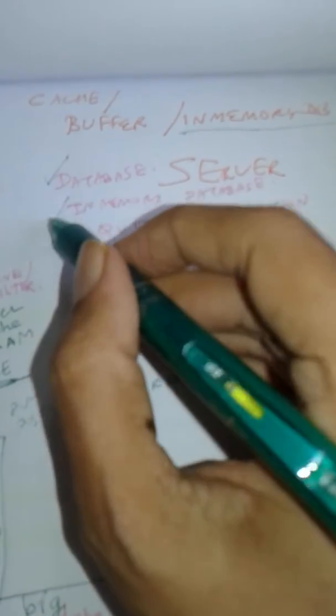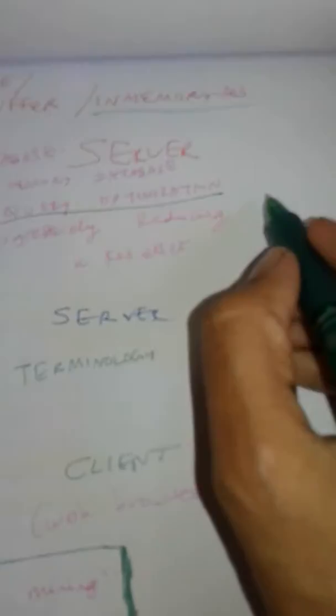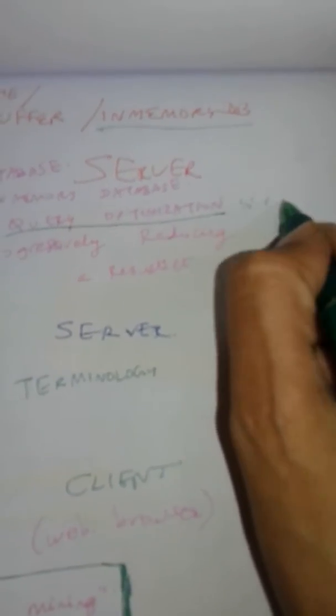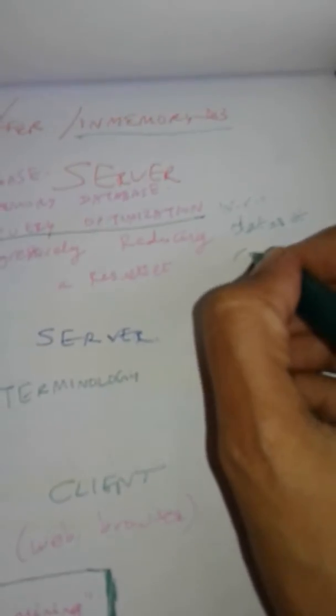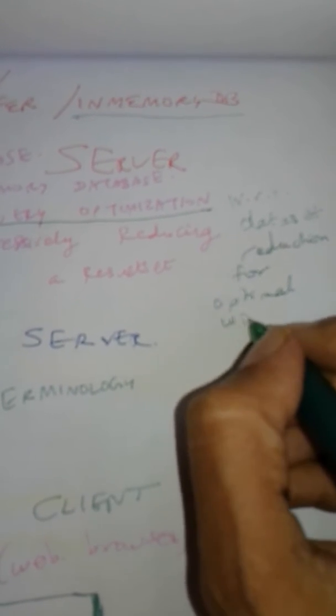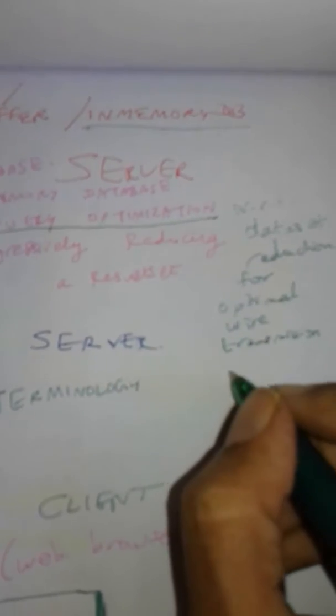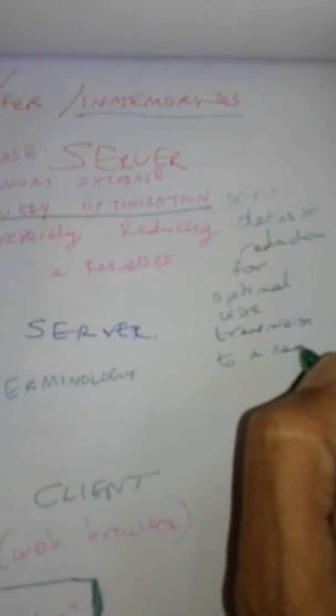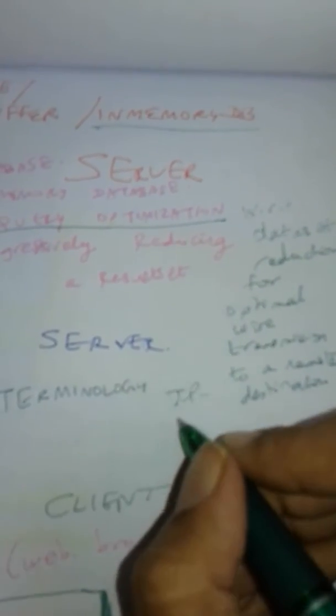We saw what is a database, what is an in-memory database, what is query optimization with specific reference to data set reduction—data set reduction for optimal wire transmission to a remote destination, to a remote IP addressable destination.